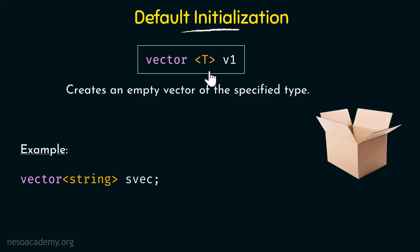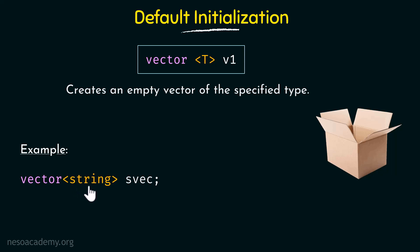Let's look at an example. Here we have specified the vector keyword followed by string within angle brackets and svec. So what this means is we are defining a vector of the string type and the name of the vector is svec. Since we are not initializing it to any value it would be an empty vector.